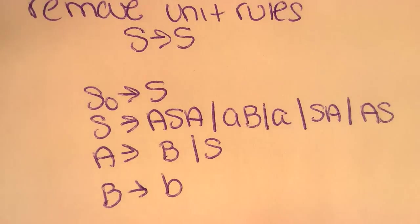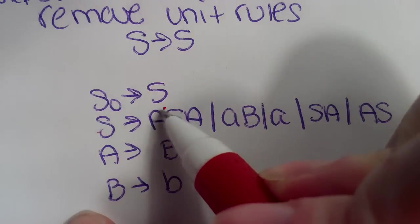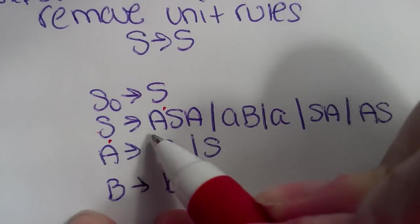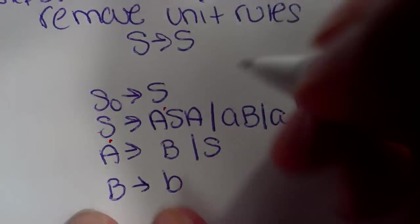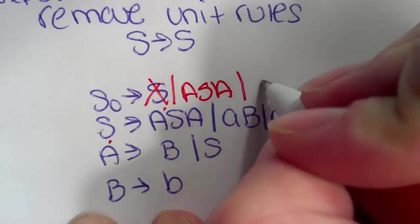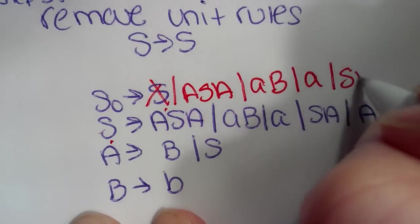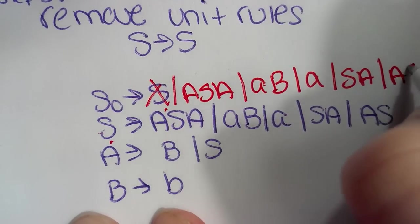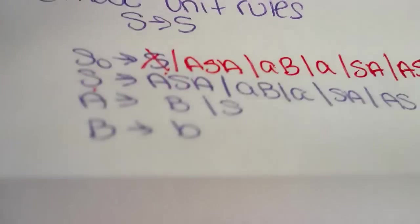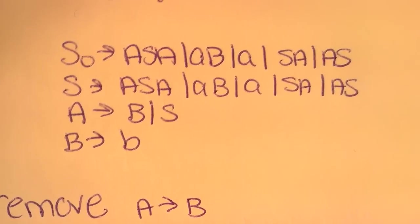Our next rule is to remove S naught points to S, which is just as simple. Since S naught points to S and we know what S is, we just replace everything in S naught with S. So we would cross off S and put in ASA or AB or A or SA or AS. That would then make our new equation look like so.